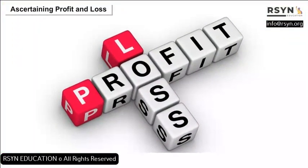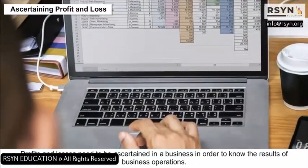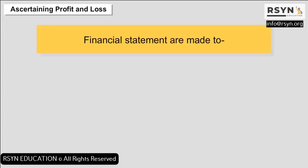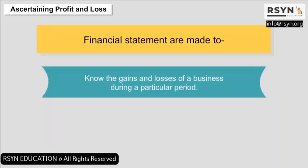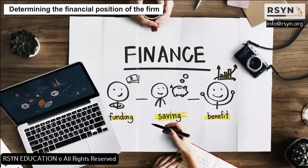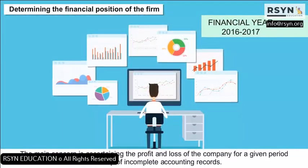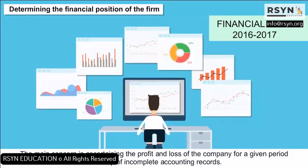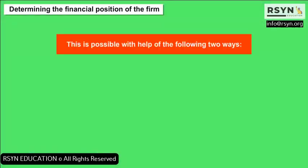Profit and losses need to be ascertained in a business in order to know the results of business operations. Hence, financial statements are made to know the gains and losses of a business during a particular period, know the closing balance of assets and liabilities at the end of a given period, and determine the financial position of the firm. The main concern is ascertaining profit and loss for a given period with the help of incomplete accounting records.